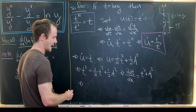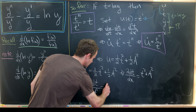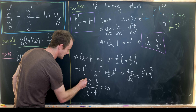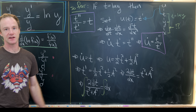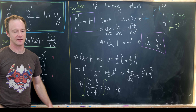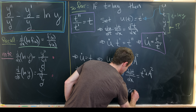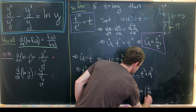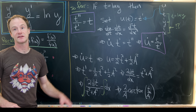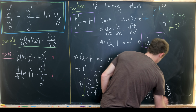We can rewrite as 2 dt / (t² + a²) = dx. Taking the anti-derivative of both sides: the left-hand side involves the inverse tangent — a standard integral from calculus — giving (2/a) · arctan(t/a). The right-hand side gives x + b/a, where b/a is a constant of integration.